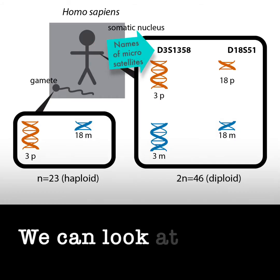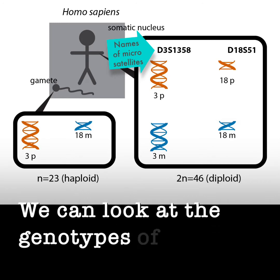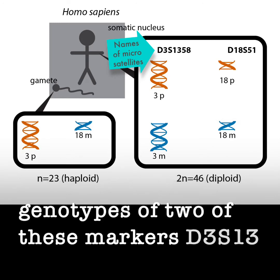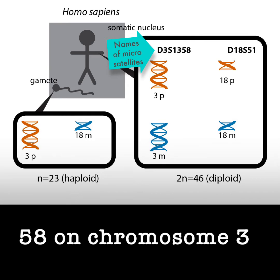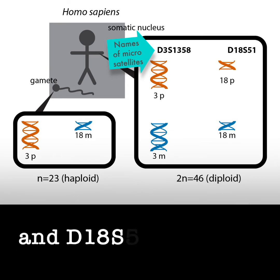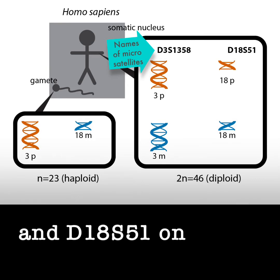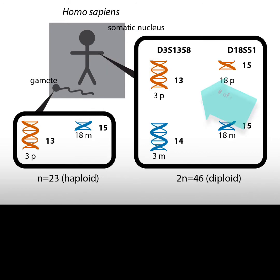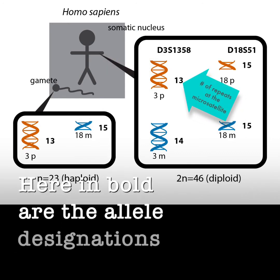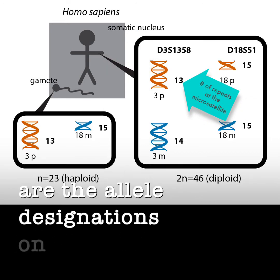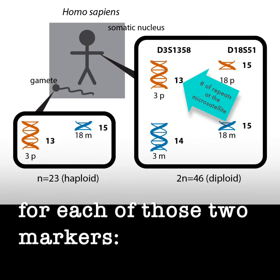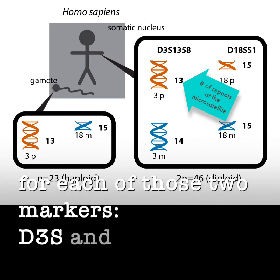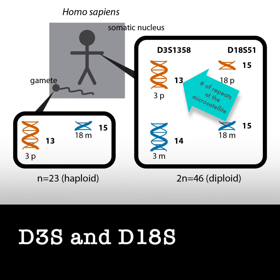We can look at the genotypes of two of these markers: D3S1358 on chromosome 3 and D18S51 on chromosome 18. Here in bold are the allele designations on each chromosome for each of those two markers, D3S and D18S.